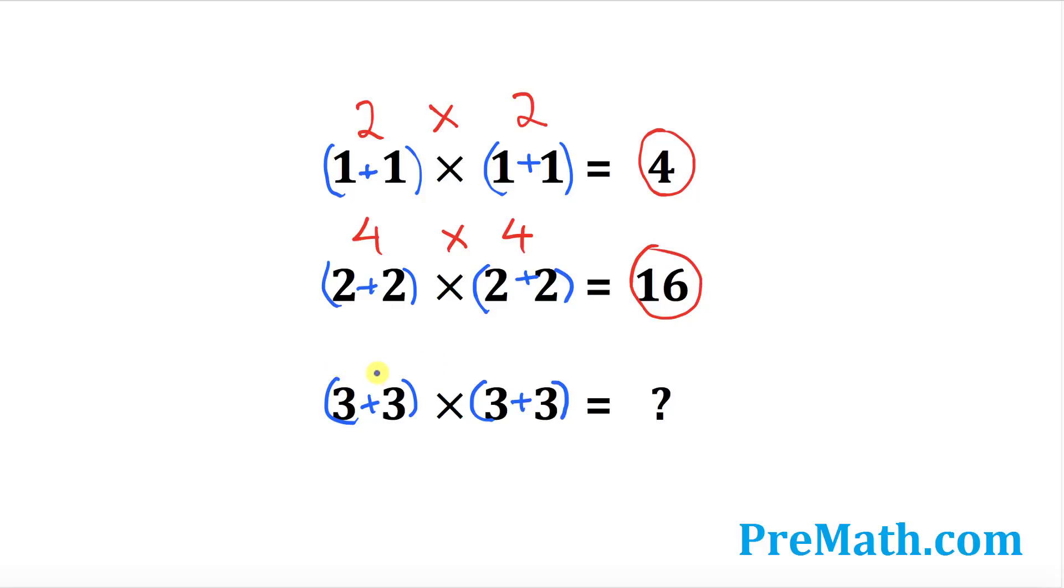if we use the same pattern, we can come up with our answer. Three plus three is what? Six times six is going to be then what? So this number is going to become simply thirty-six. So that's your answer.